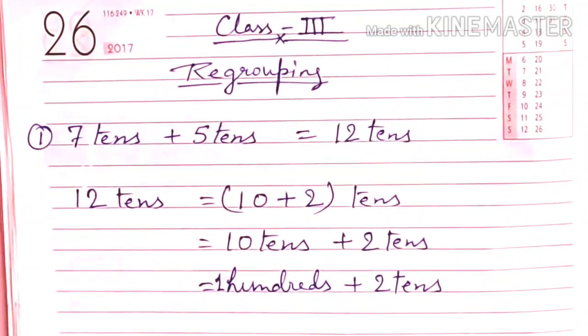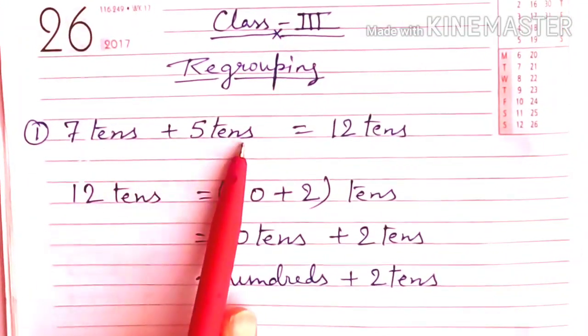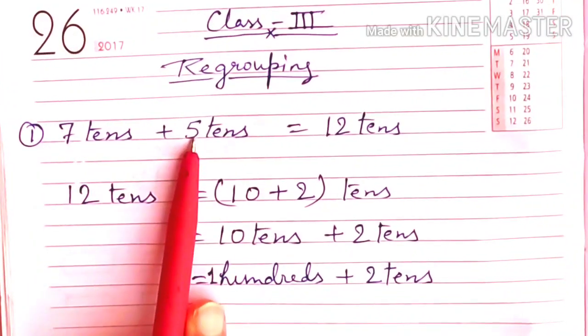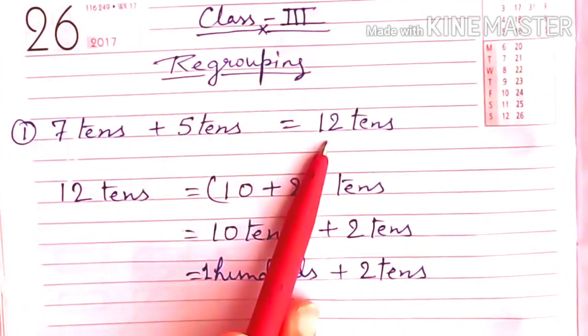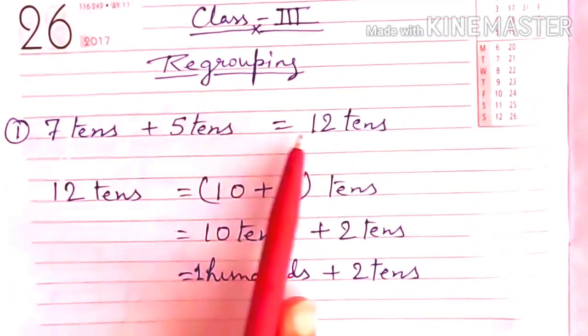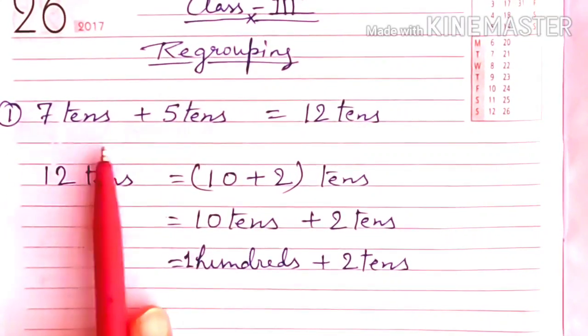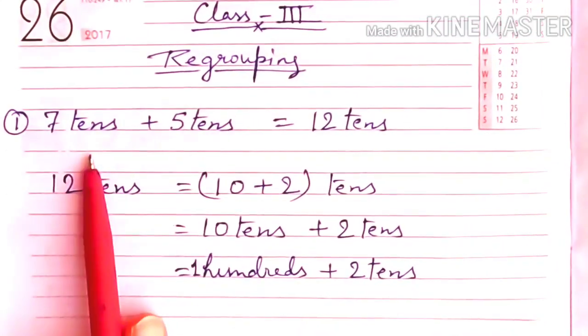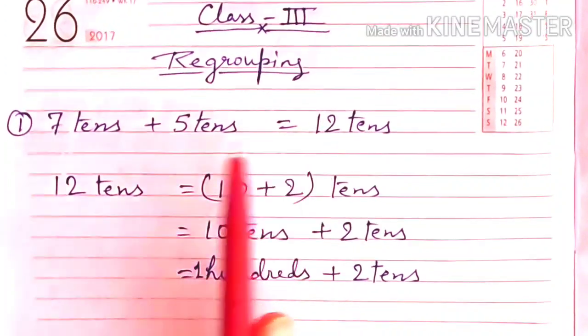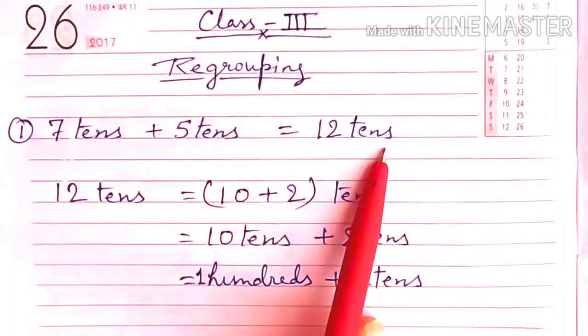Let's see the first one. It is 7 tens plus 5 tens. 7 plus 5 is equal to 12. That means 7 tens plus 5 tens equal to 12 tens. When we add 7 tens and 5 tens, 7 plus 5 is 12, so 7 tens plus 5 tens gives us 12 tens.